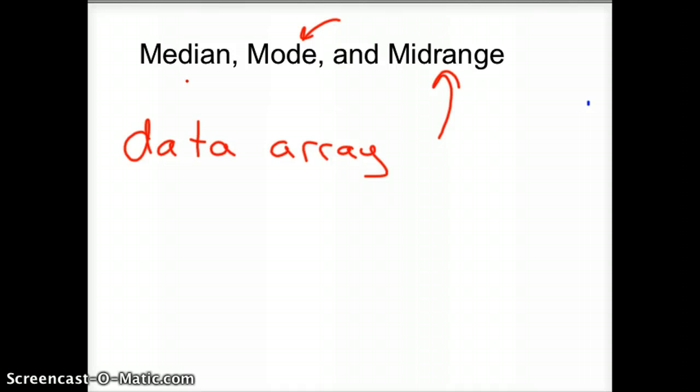Okay, median, mode, and midrange. Median stands for the middle number in a data array. A data array is an ordered list, so you have to take all of your numbers, put them in order, and then find the middle one. Mode is the one that occurs most often. Midrange is adding your range and dividing by 2, so it's your low plus your high divided by 2. It actually has a formula that goes with it. So those are the three we'll talk about in this video.